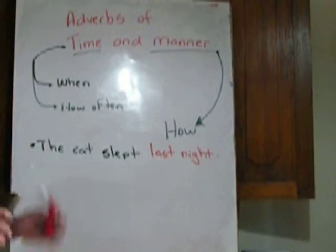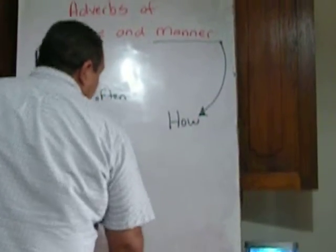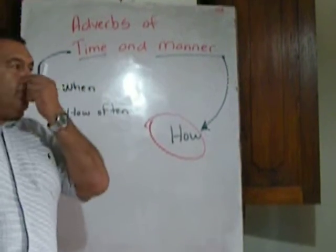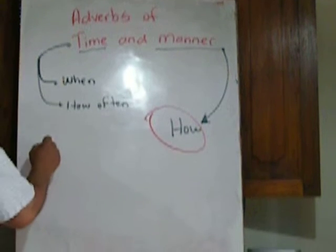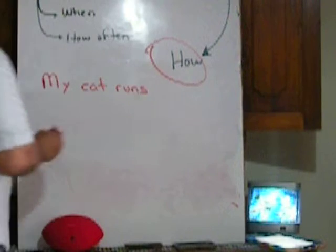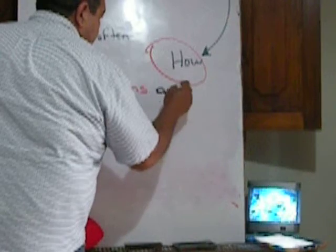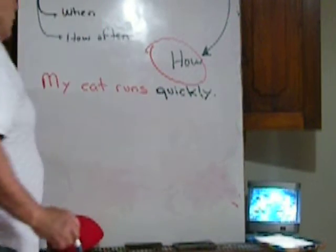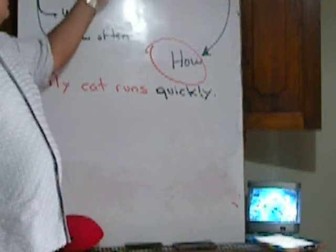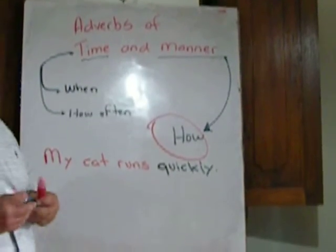This is a very easy thing to learn. Now let's go with adverbs of manner. For example, I can say: my cat runs quickly. It's telling me how does the cat run. So these are the two types of adverbs we have: adverbs of time and adverbs of manner.